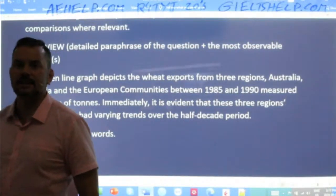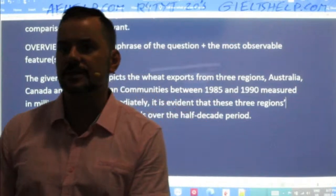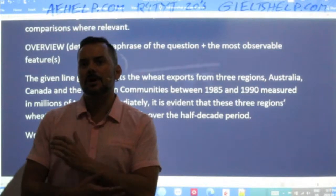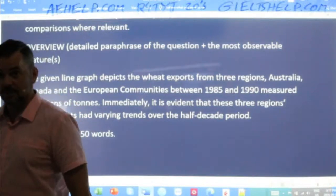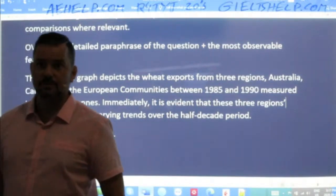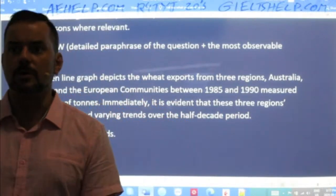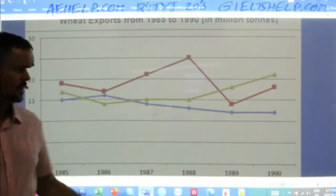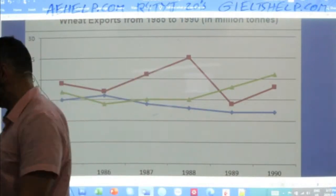Janiel says: 'At first sight, it is obvious that three countries' wheat exports show different trends in the given period.' Be careful — it's not 'countries,' Janiel. As Monica pointed out, the European Communities is made up of multiple countries, so it's better to say 'regions.' Botir says the three regions show different amounts in 10 years — be careful, we don't have 10 years, and you need to be more specific than 'different amounts.'